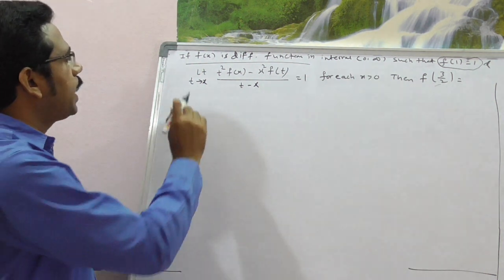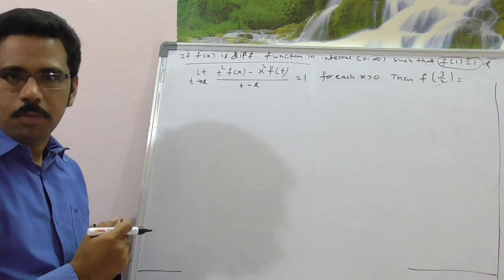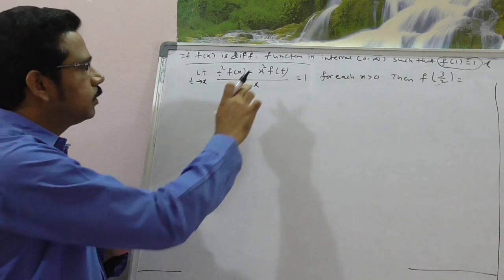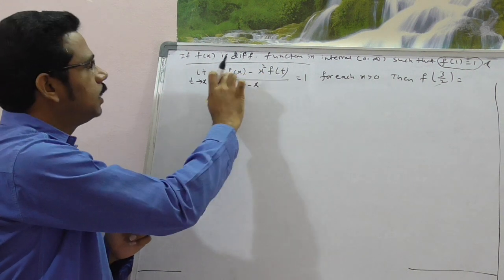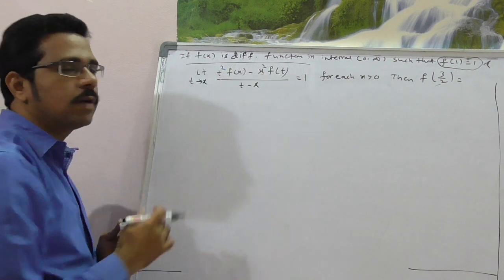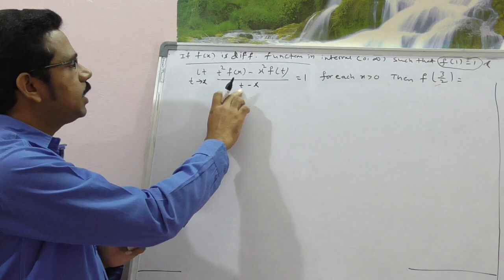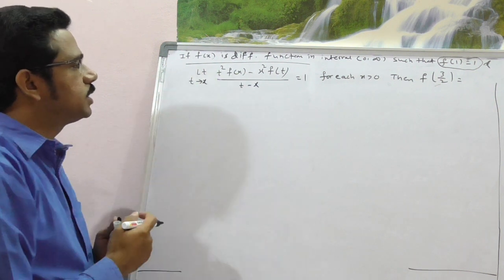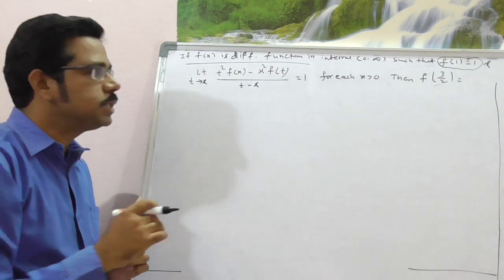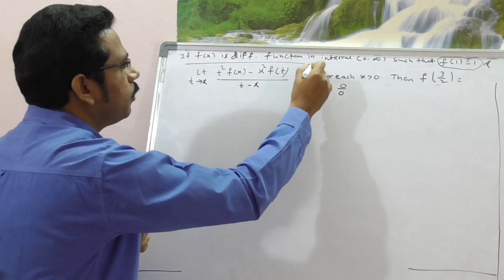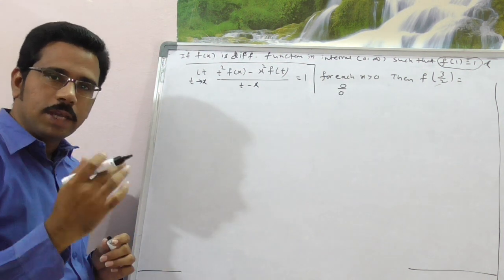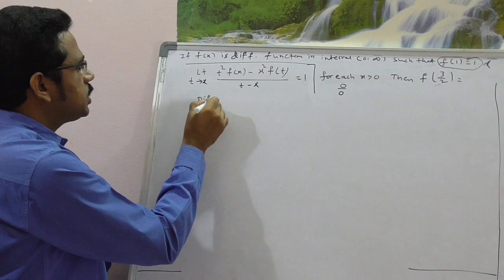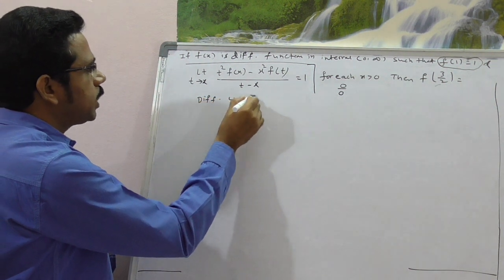By substituting t = x directly into the limit, the numerator becomes x²·f(x) − x²·f(x) = 0, and the denominator becomes x − x = 0. So the limit is in 0/0 form. Since the limit is in 0/0 form, we have to apply L'Hôpital's rule.